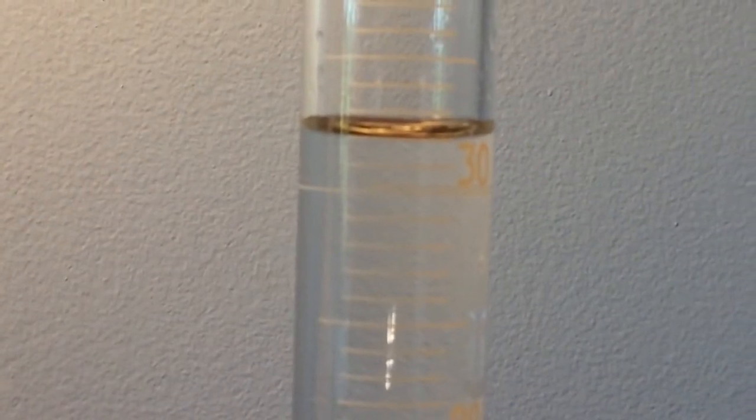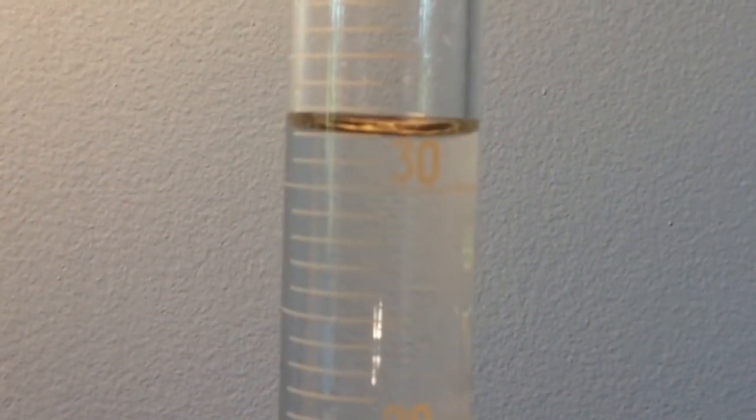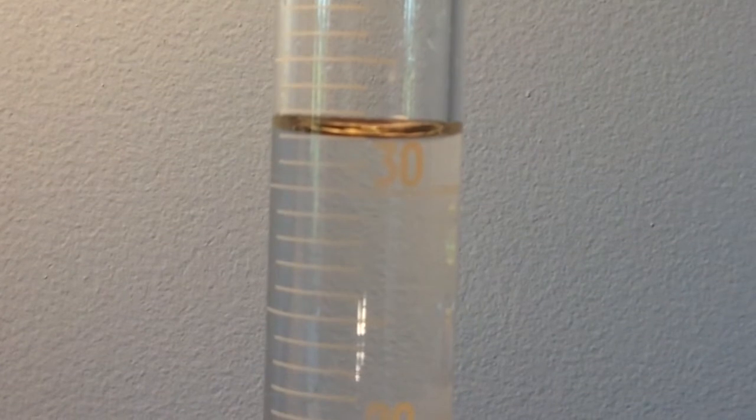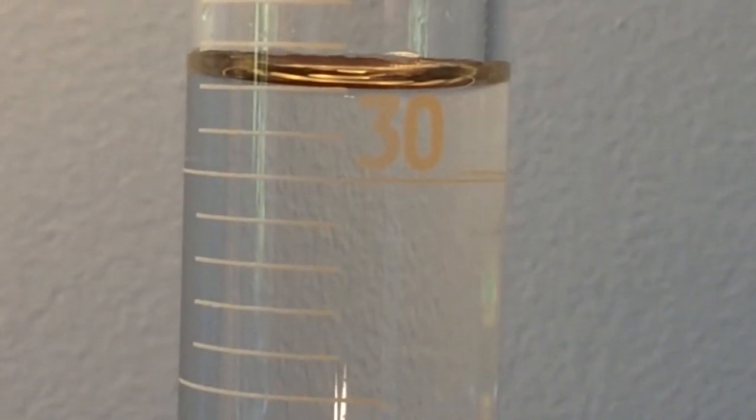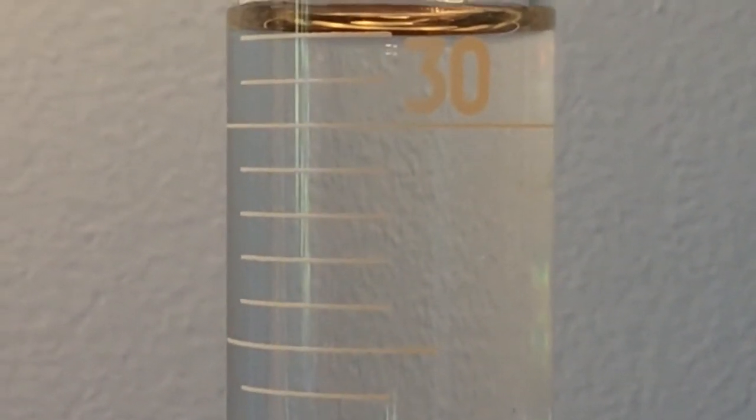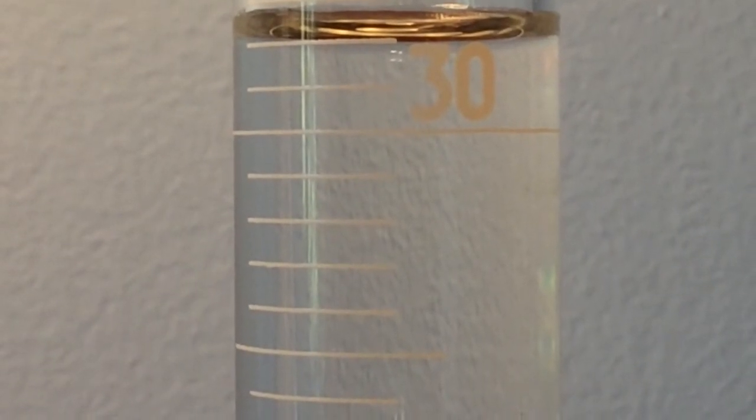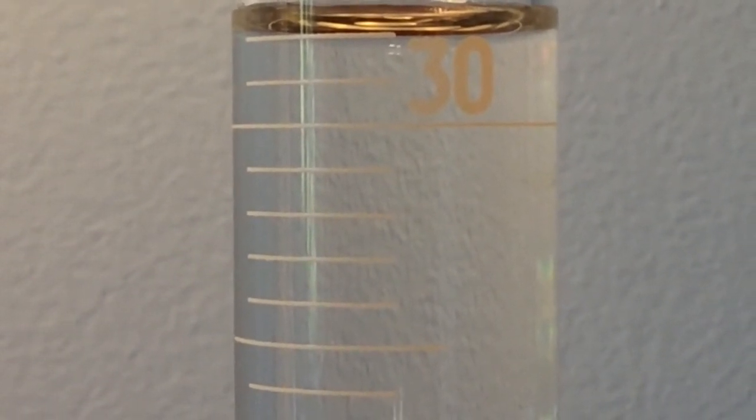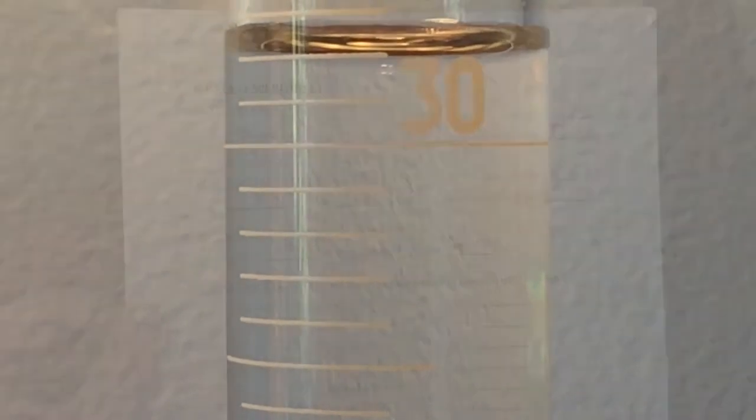Now we're going to take that metal cylinder and carefully drop it in here so it doesn't splash or break anything. We see that the liquid level went up. So again our job is to read this. Make sure there's no parallax. Let's actually look right at it. That might be right on the line.